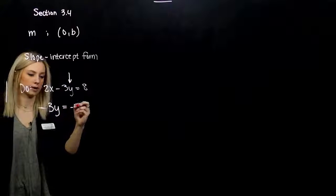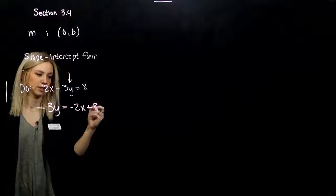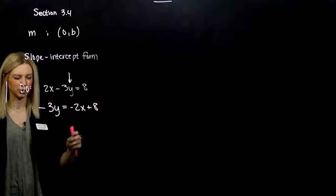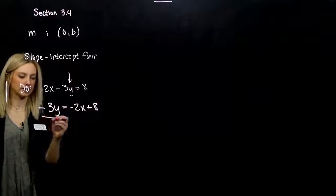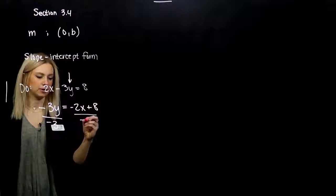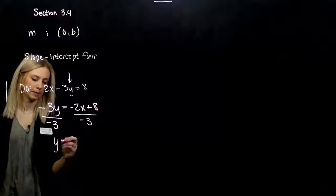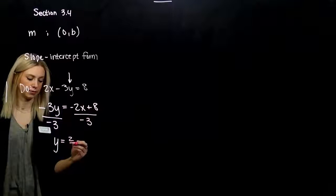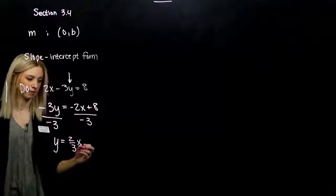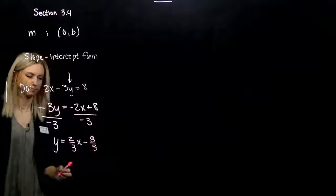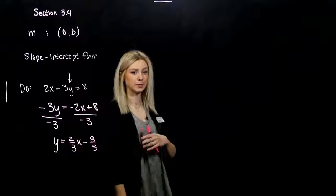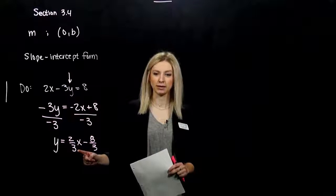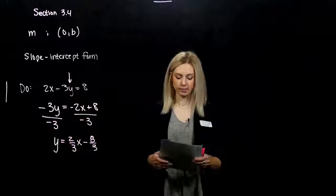What do we have to move first? 2x to the other side. We'll get into the habit of writing the x first. I want y on its own, so we divide everything by minus 3. A negative divided by a negative gives me positive 2/3x minus 8/3. The form is gross, but it still tells us how much we're rising, how much we're running, and where the y-intercept is.